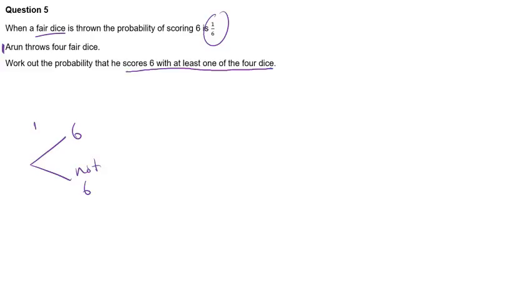Now we know the probability of scoring a six is one in six, so not a six, the other five numbers, is five in six. With the next part of the probability tree, it doesn't matter what goes on with this part here. Whether any more sixes are rolled or not, at least one of the four dice has rolled a six already, so we can leave that there and just follow on this bottom part here.